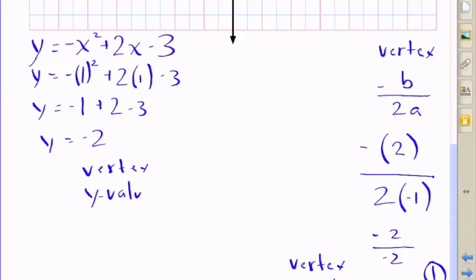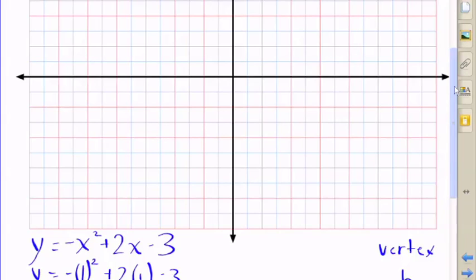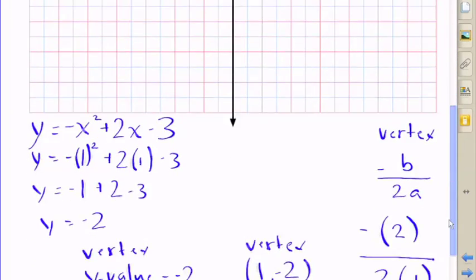So now I know the coordinates, the ordered pair of the vertex. It's going to be 1, negative 2. That is the point at which my graph is going to reach a top height because it's opening downward. That's going to be the height of my graph. So I'm going to graph that. That's going to be the top of my graph, my vertex.